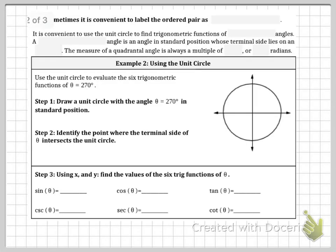Sometimes it is convenient to label the ordered pair as sine and then, oh, cosine, sorry, I did that backwards, as cosine and sine.